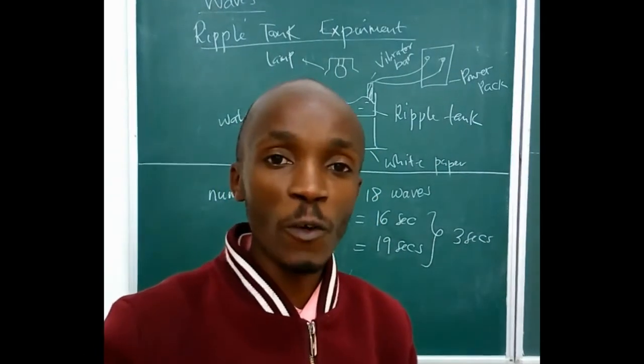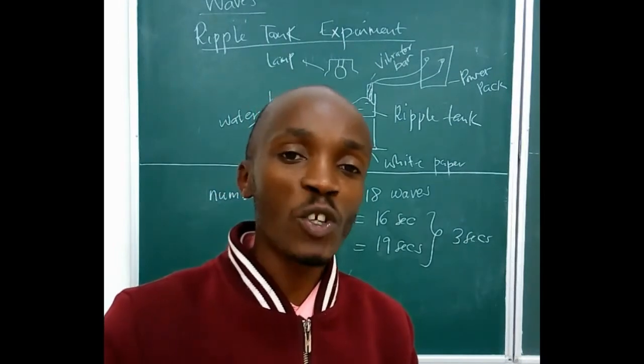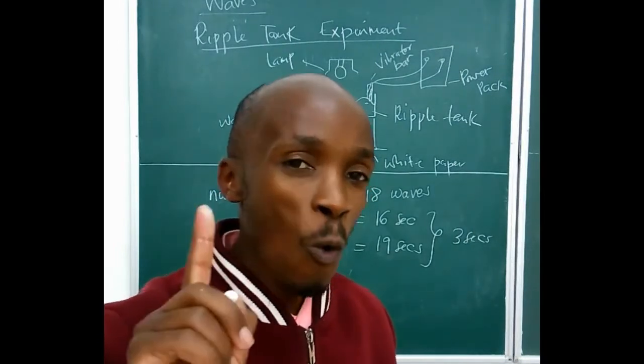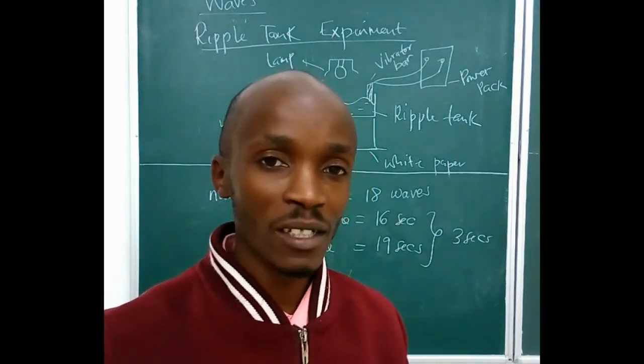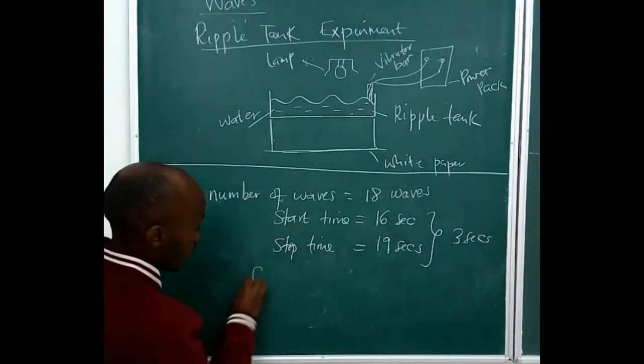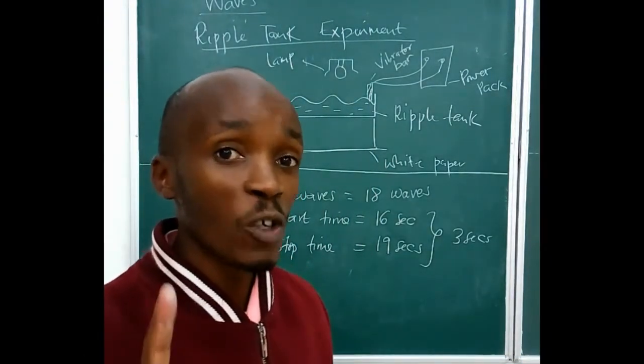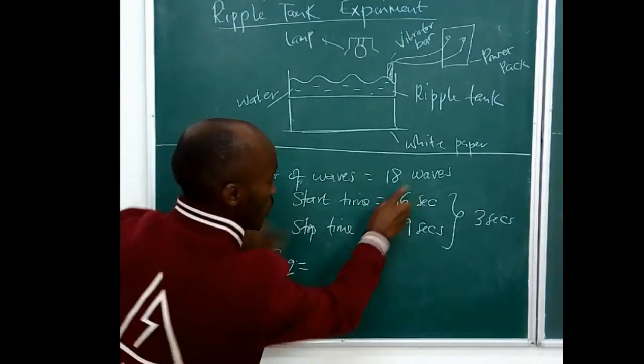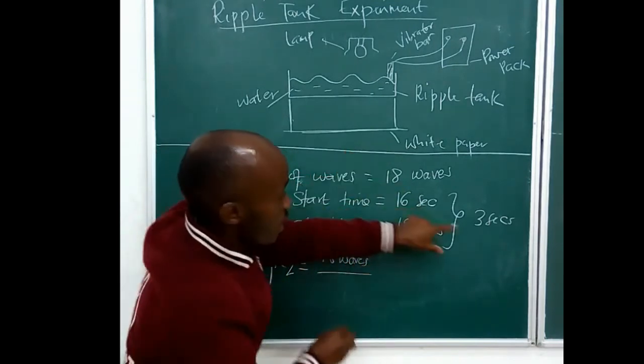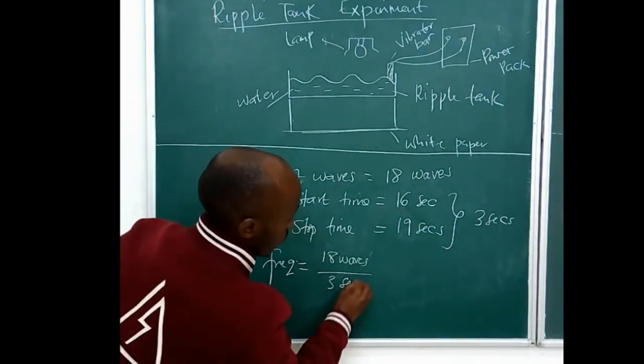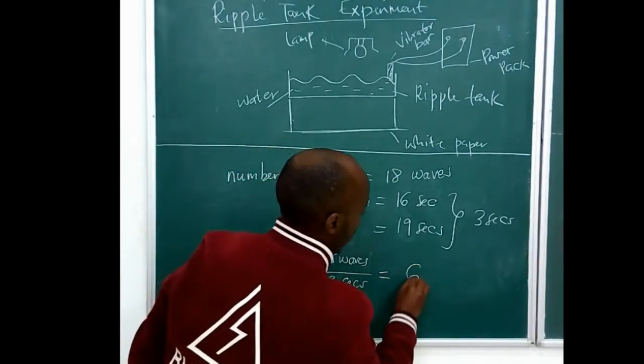How can we be able to get frequency from the given data? Now, frequency is the number of complete oscillations that have been made within 1 second, and the unit for frequency is Hertz. So what is the frequency? Frequency is the number of complete oscillations made in 1 second. So frequency is equal to these 18 waves, 18 waves being made in 3 seconds. And this means that our frequency is 6 Hertz.